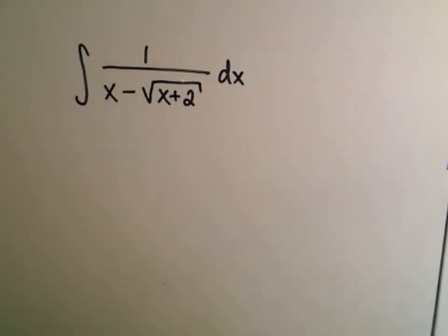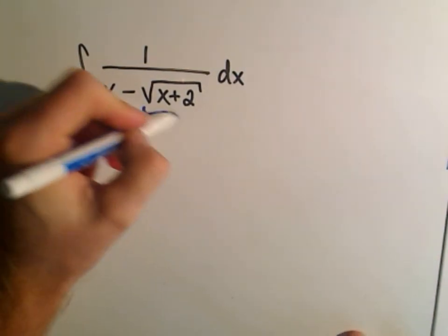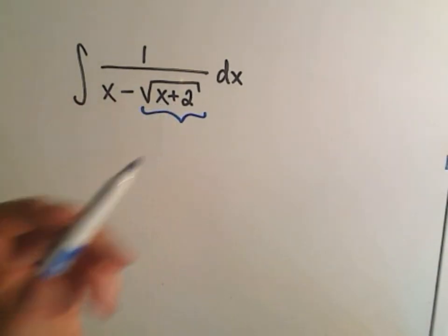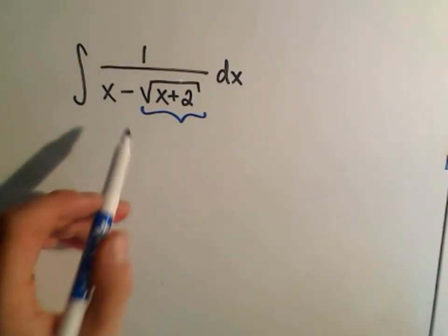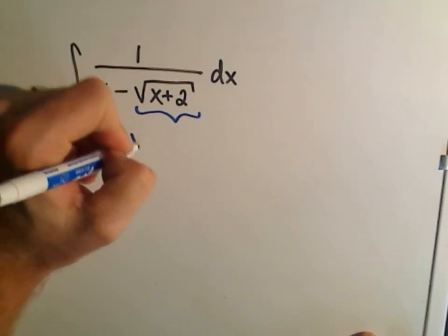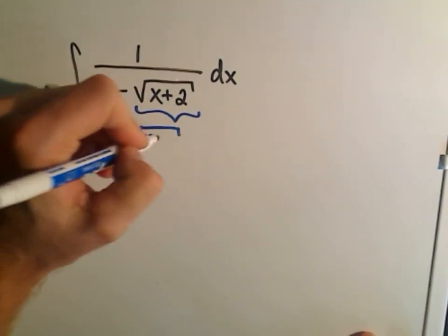So the idea is here we have this square root of x plus 2. If I saw x squared plus 2, I would maybe think trig substitution, but even then, you know. In this case, we're going to let u equal the square root of x plus 2.